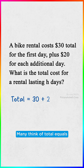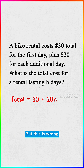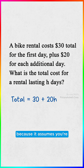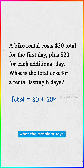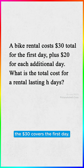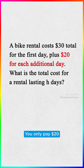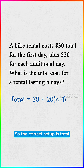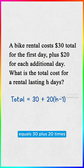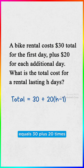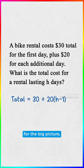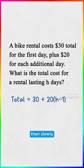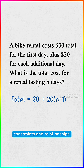Many think the total equals 30 plus 20H, but this is wrong because it assumes you're paying $20 every day, including the first, which isn't what the problem says. The $30 covers the first day, and you only pay $20 per day after that, so the correct setup is total equals 30 plus 20 times (H minus 1). Consider reading word problems twice — first for the big picture, then slowly to catch the specific constraints and relationships.